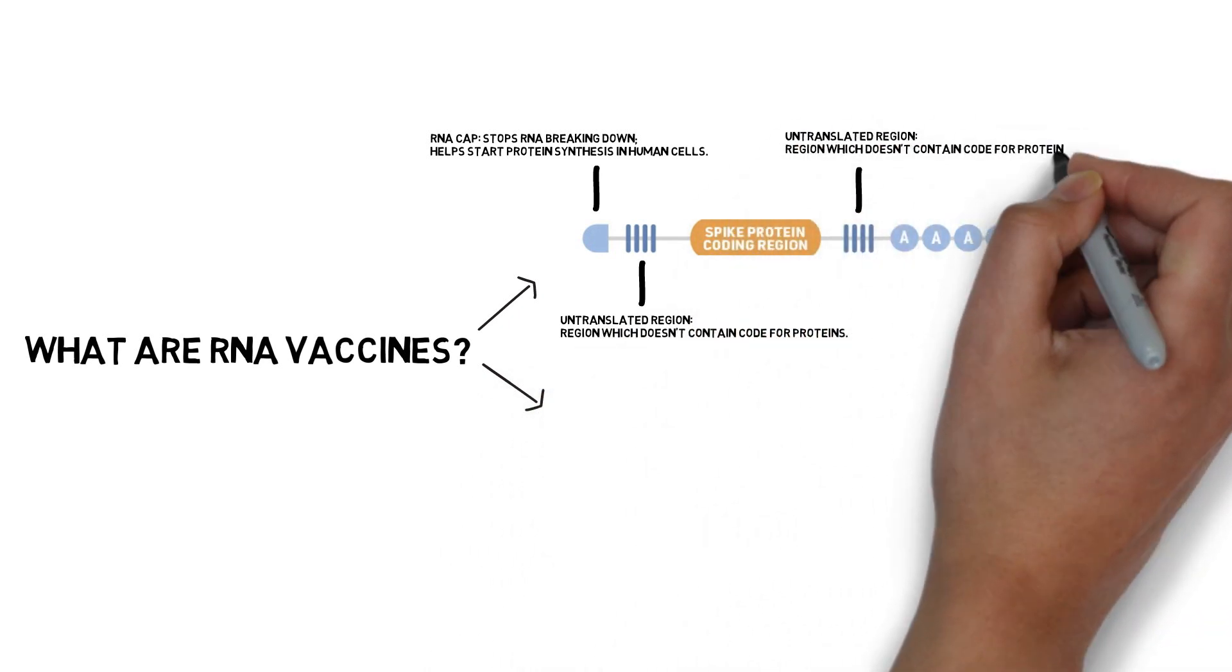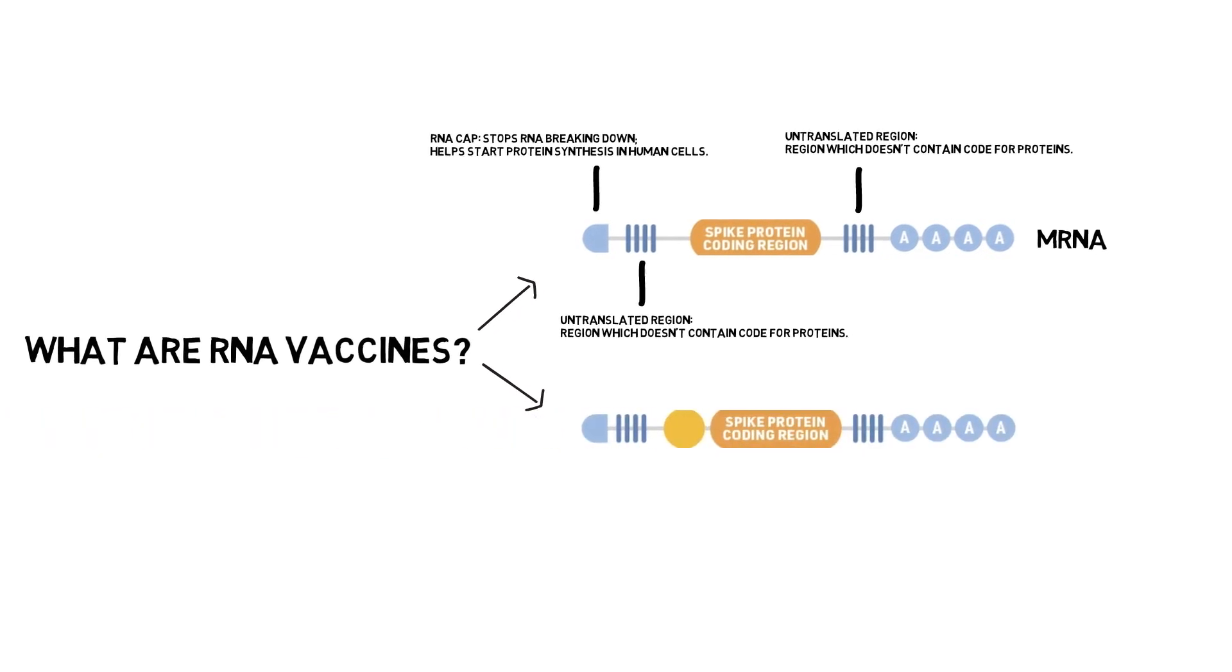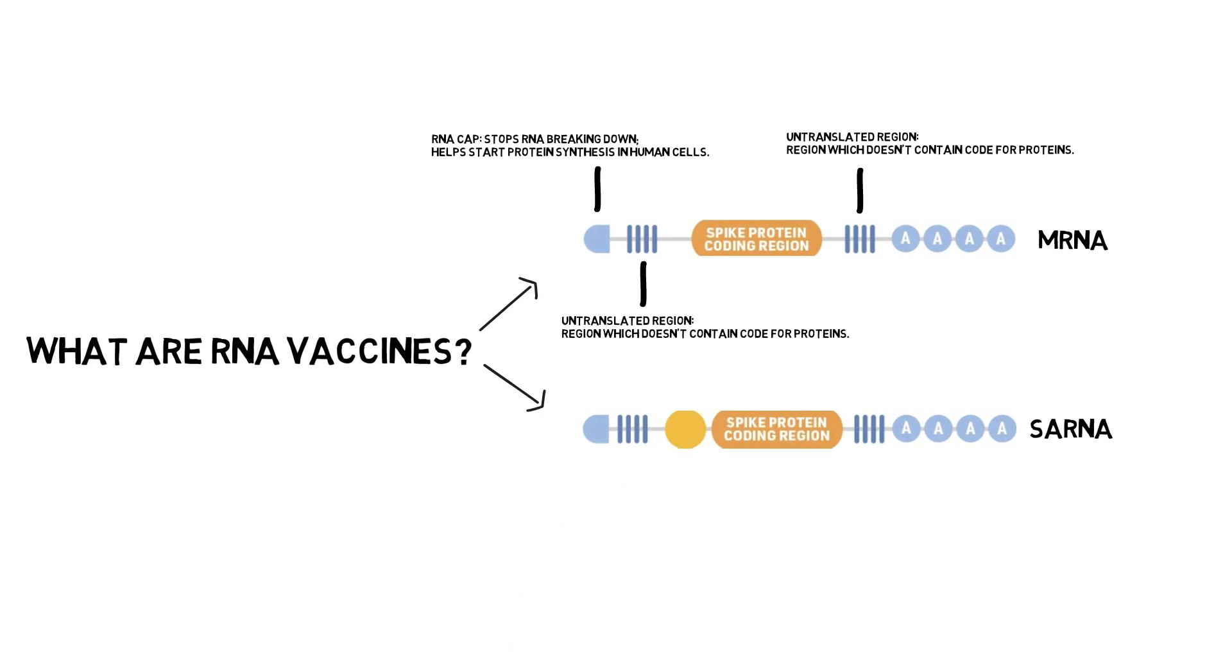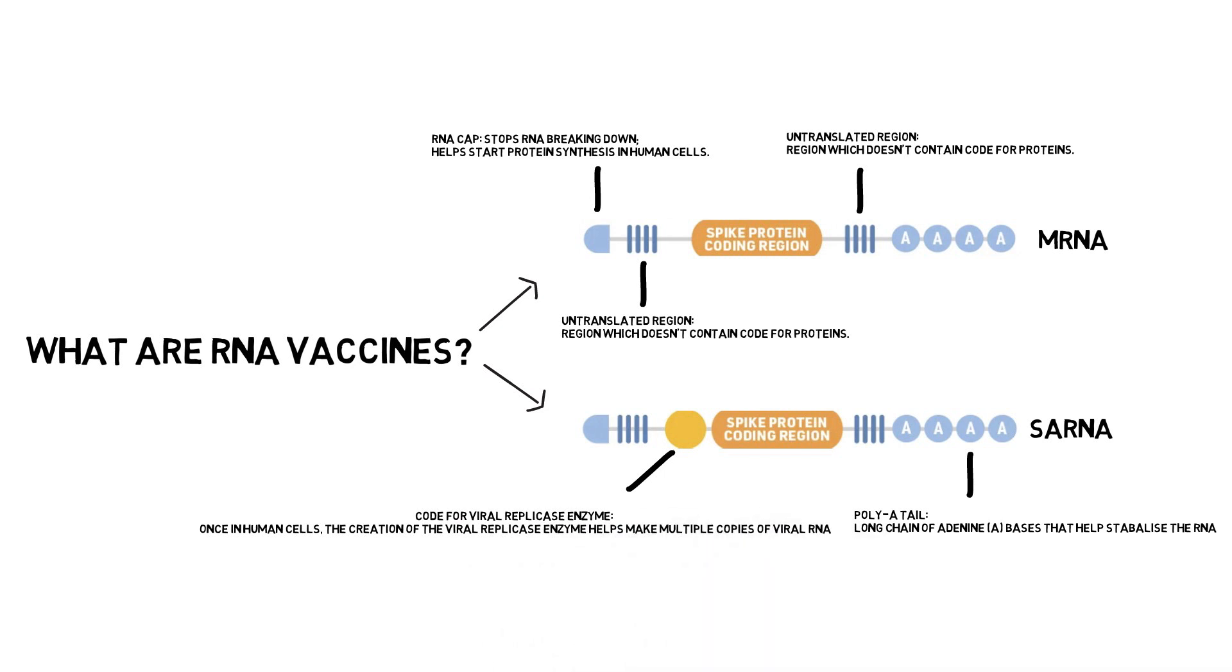As the diagram shows, the S-A RNA has an extra piece of code which codes for a viral replication enzyme. Once the S-A RNA enters our cells upon receiving the vaccine shot, this enzyme helps make multiple copies of viral RNA and thus, the S-A RNA vaccine, as opposed to the mRNA vaccines, can be given in smaller doses to patients.